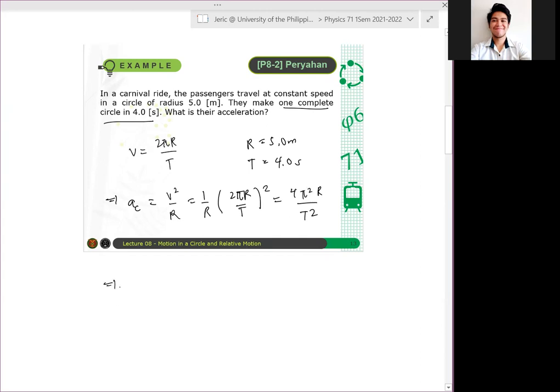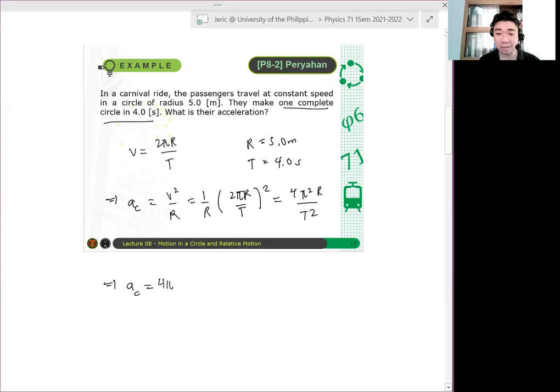Okay, now in that case, the centripetal acceleration, we just plug and play. We have 4π² times the radius which is 5 meters, divided by the period which is 4.0 seconds quantity squared, and we get something like 12.3 meters per second squared. That is the centripetal acceleration for the given carnival ride.